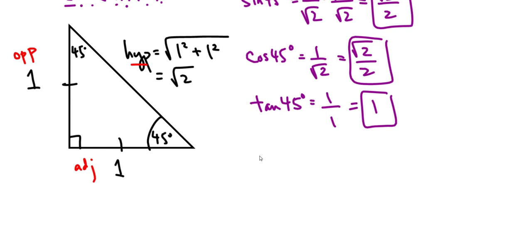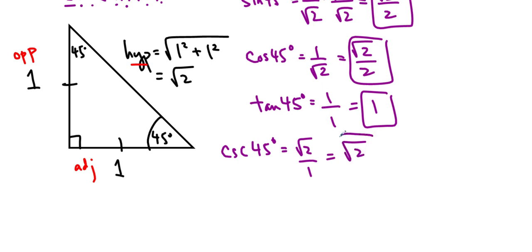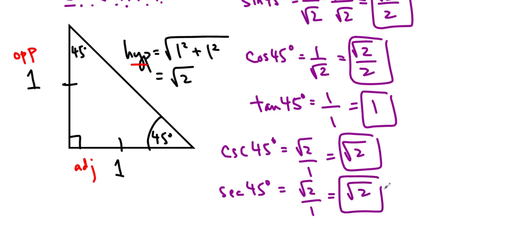We can also do the reciprocal trig ratios. Cosec of 45 degrees is equal to the hypotenuse over the opposite, so root 2 over 1, which simplifies to be root 2. Sec 45 degrees is equal to the hypotenuse over the adjacent, so again root 2 over 1, which ends up being root 2 as well. And finally, cotangent of 45 degrees is the adjacent over the opposite, which is 1 over 1, simplifying to be 1.